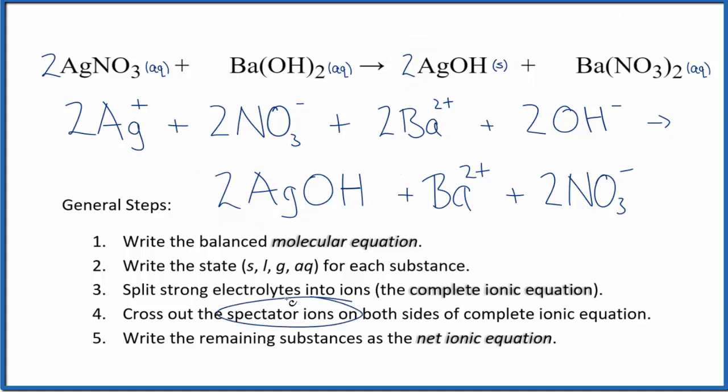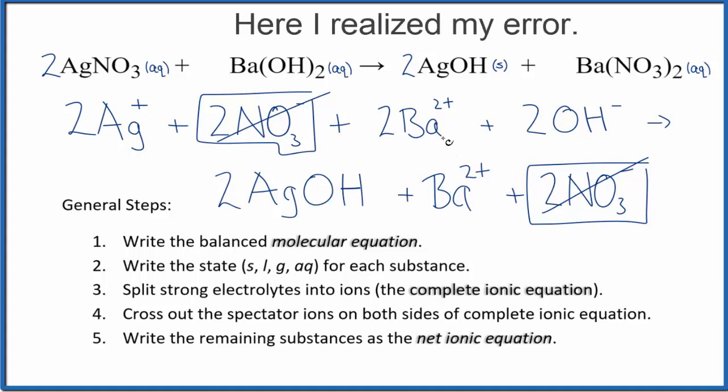Now we can cross out the spectator ions on each side. In the reactants on top, I can see I have two nitrate ions. I also have two nitrate ions down here in the products. Those are spectator ions. I have two barium ions here. And I noticed that I've counted incorrectly, because I see two barium ions here.